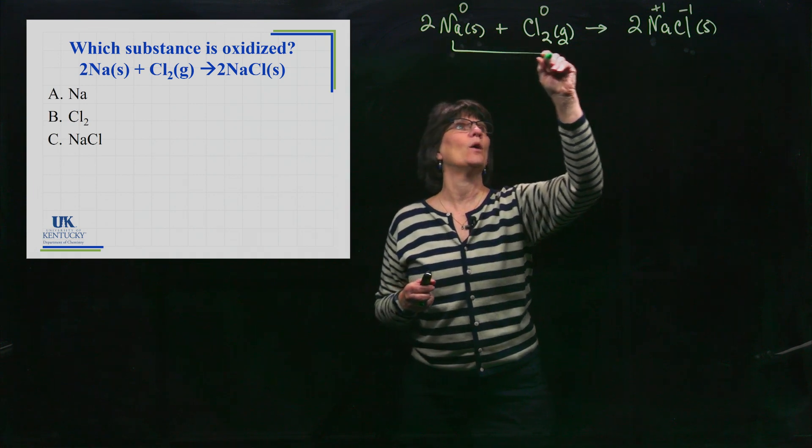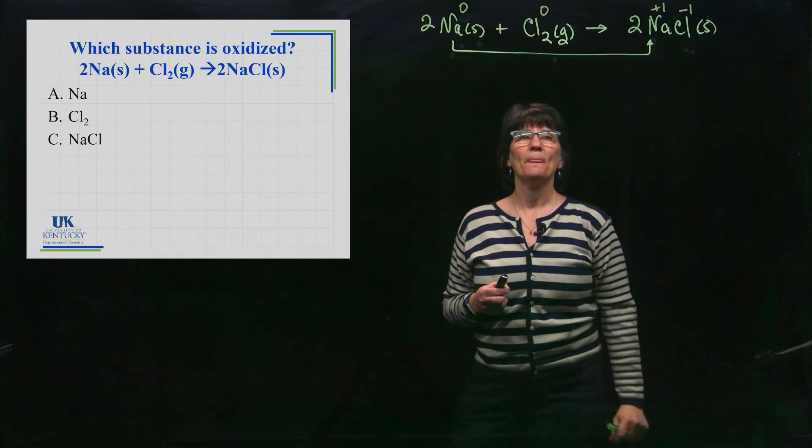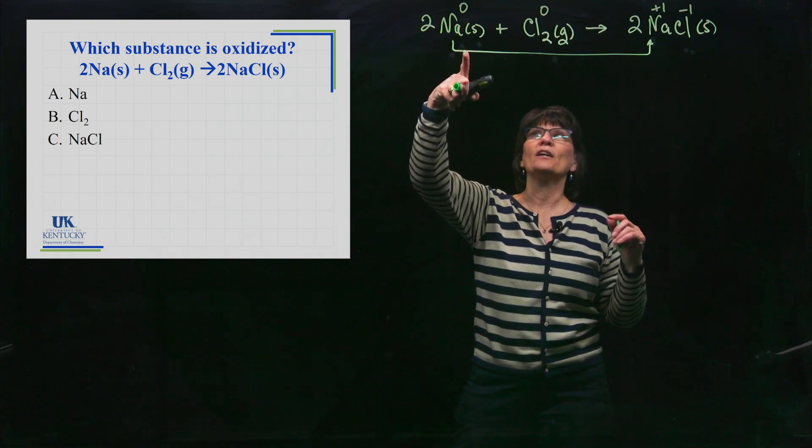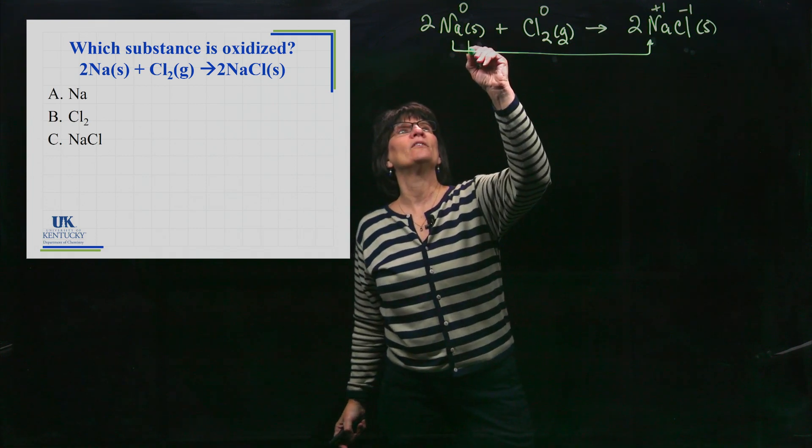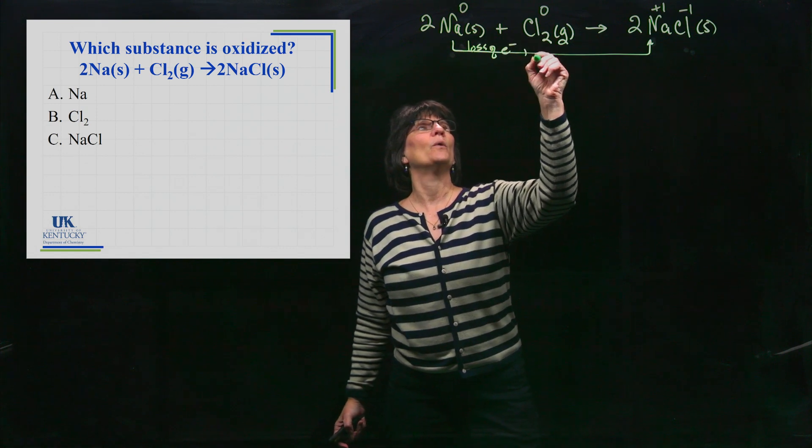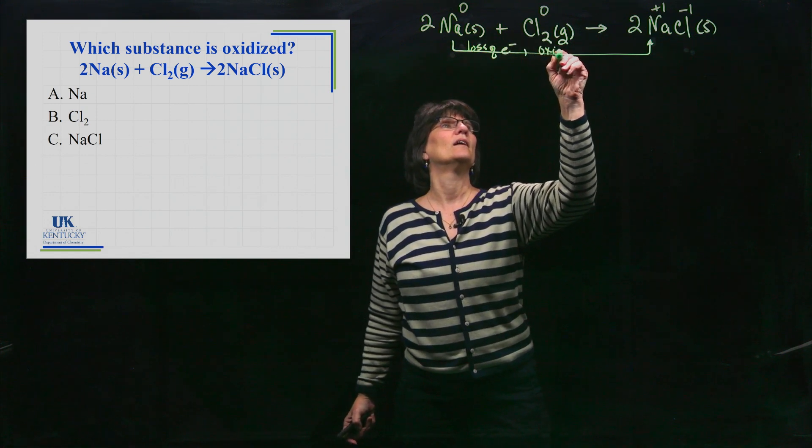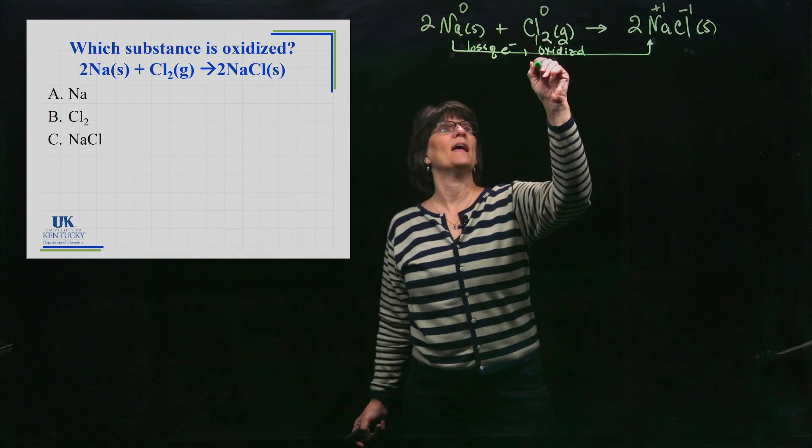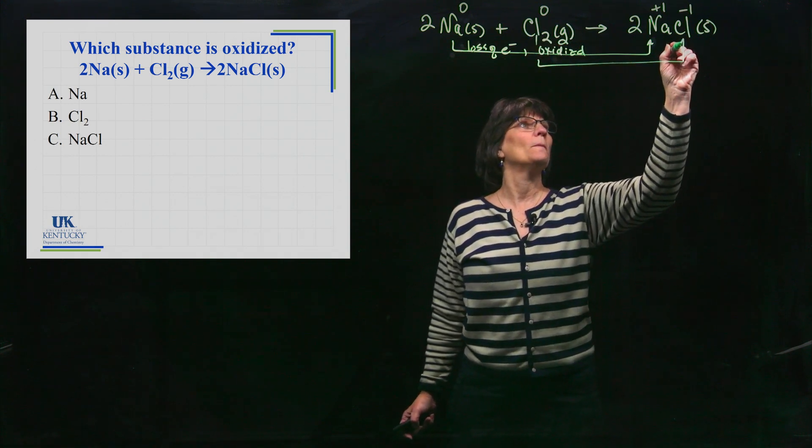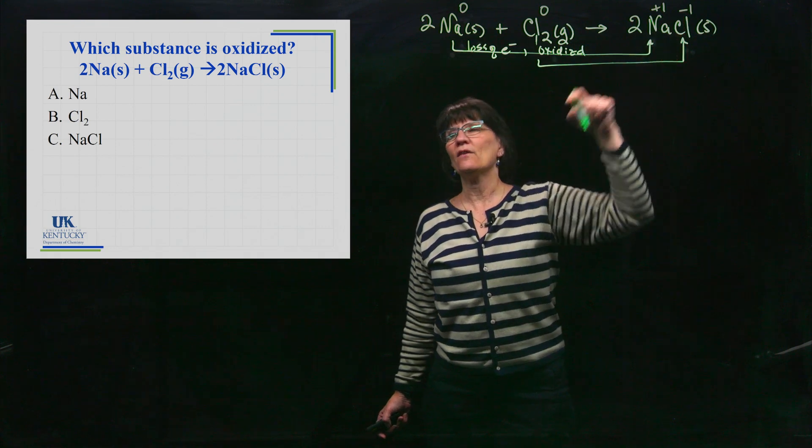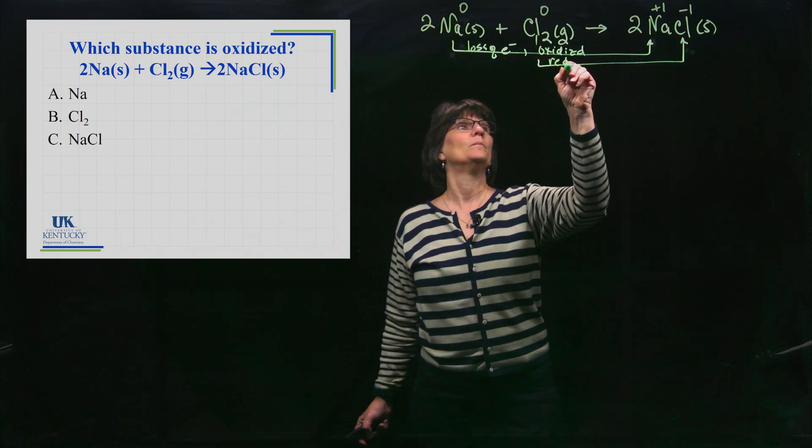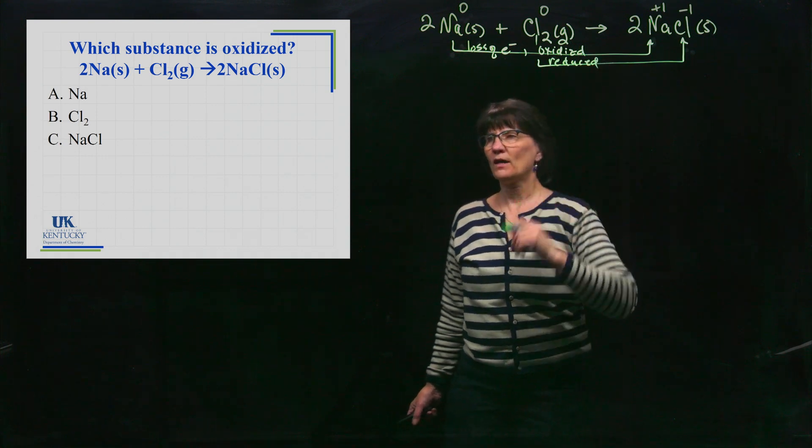How do you go from zero to plus one? We had to have an electron pulled off. This guy lost an electron, so sodium has a loss of the electron, so it is oxidized. You cannot have something oxidized unless you have something else reduced. The chlorine gained that electron, and so the chlorine is reduced.